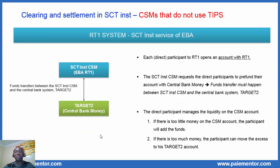CSMs that do not use TIPS need a connection to Target2 for the funds transfer between those CSMs and the central bank system, Target2. Each direct participant to RTL1 must open an account with RTL1. That account is sometimes referred to as a technical account. It is used exclusively for the settlement of SCT INST transactions processed in RTL1. Again, what we see here is valid for any CSM that does not use TIPS for settlement. EBA RTL1 requires direct participants to pre-fund their account with central bank money, so a fund transfer must happen between RTL1 and the central bank system Target2. Once the funds arrive on the RTL1 account, they can be used to settle SCT INST transactions.